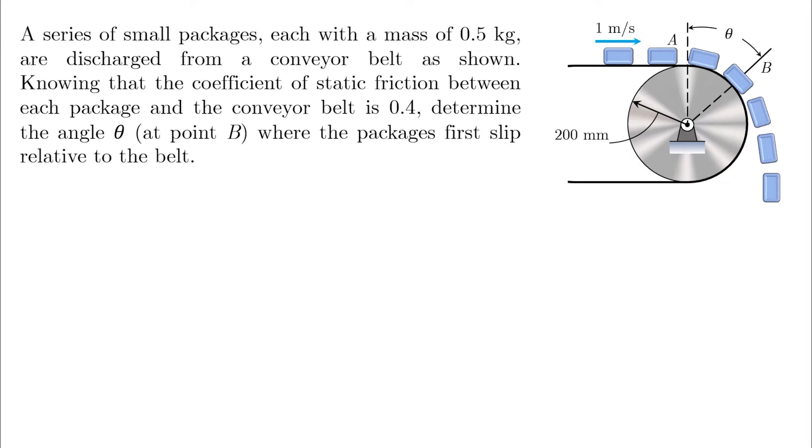A series of small packages, each with a mass of 0.5 kg, are discharged from a conveyor belt as shown. Knowing that the coefficient of static friction between each package and the conveyor belt is 0.4, so μs equals 0.4, determine the angle θ at point B here, where the packages first slip relative to the belt.